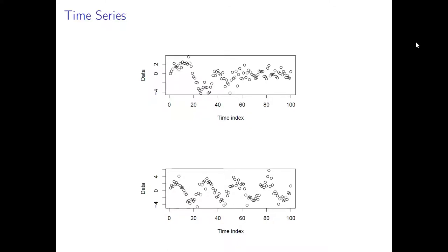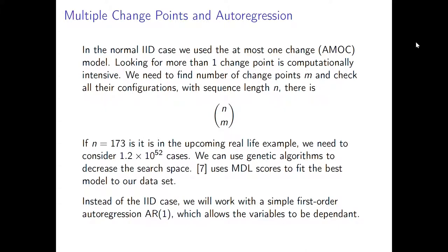Later on we will also look at a method which uses deep learning to detect human-specified change points. Next we will look at an example for how to detect multiple change points for AR1 time series, which is especially computationally intensive if we don't even know the number of change points. In that case we would have to try numbers from 0 to n-1 and all possible configurations for each integer, which is computationally almost impossible by just trying all possible solutions.